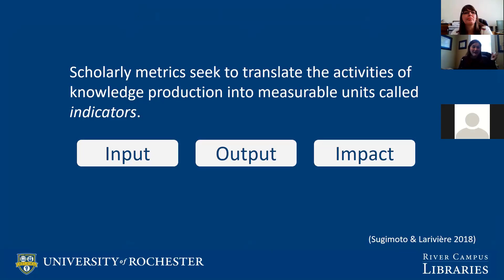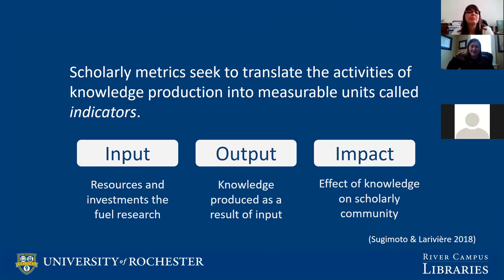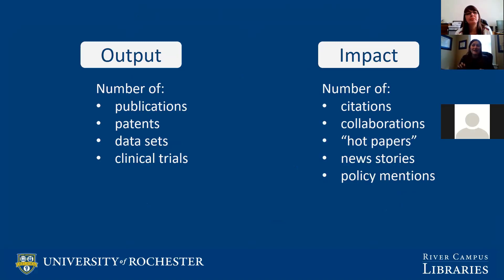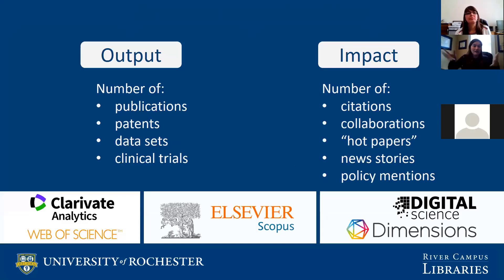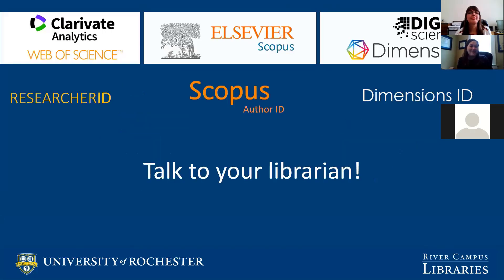We try to quantify what we produce in three ways: input, output, and impact. Input is what it took to make something happen. Output is the knowledge created — publications, patents, data sets, clinical trials, blog posts, even tweets. Impact is how the work is affecting and being received by the community — citations, news stories, policy mentions, engagement with tweets. The databases that track this in the scholarly landscape are Web of Science, Scopus, and Dimensions, all available through the library. If something seems wrong, talk to your librarian.